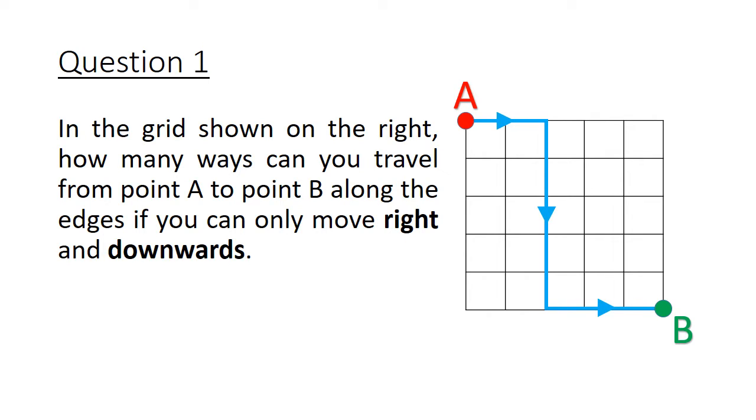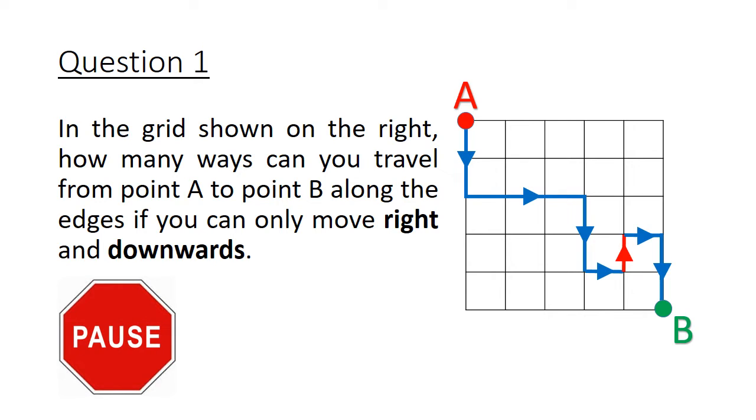For example, you could take this light blue path: 2 steps right, 5 steps down and 3 steps right. But you can't take this dark blue path because of that one red step upwards. Pause the video here and give this question a good try.